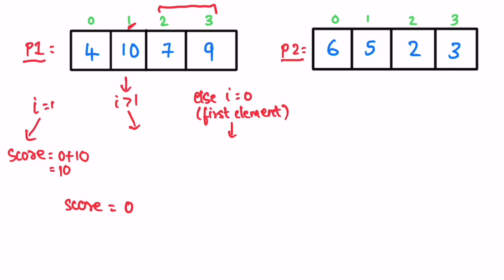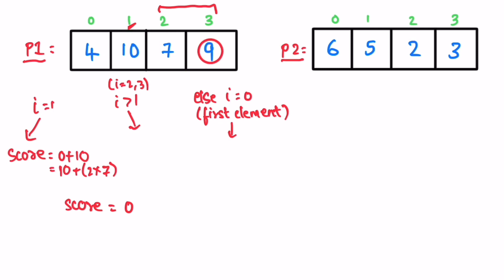For i greater than 1 — indices 2 and beyond — we check both the previous element and the second previous element. At index 2, the previous element is a 10, so we double the score: 2 × 7 = 14 is added. Moving to index 3, its second previous element is a 10, so we again double: 2 × 9 = 18 is added.